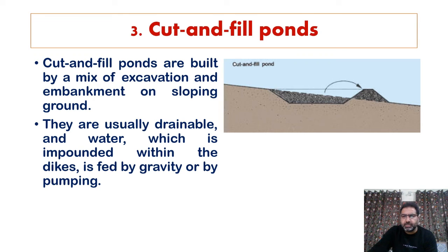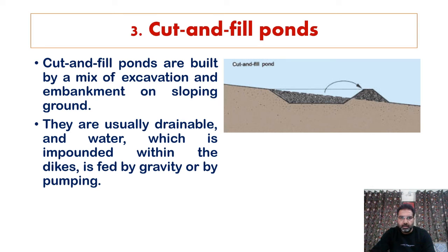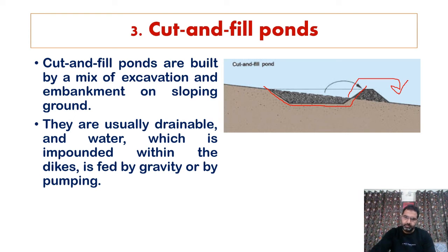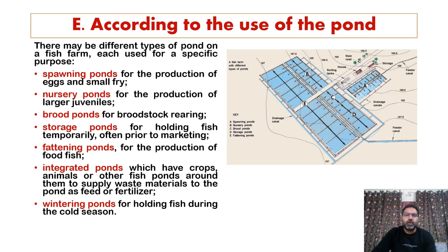The third type in this category is cut and fill ponds. In a sloping area, a certain portion is cut and that soil is used to make the embankment so that water is retained. Cut and fill ponds are built by a mix of excavation and embankment on sloping ground. They are usually drainable and the impounded water is fed by gravity or by pumping.